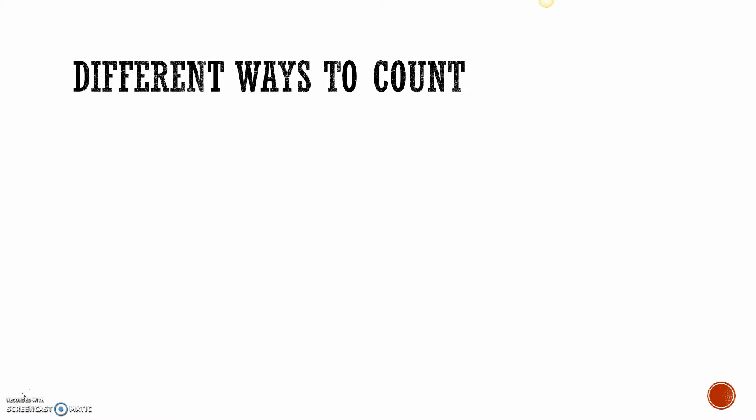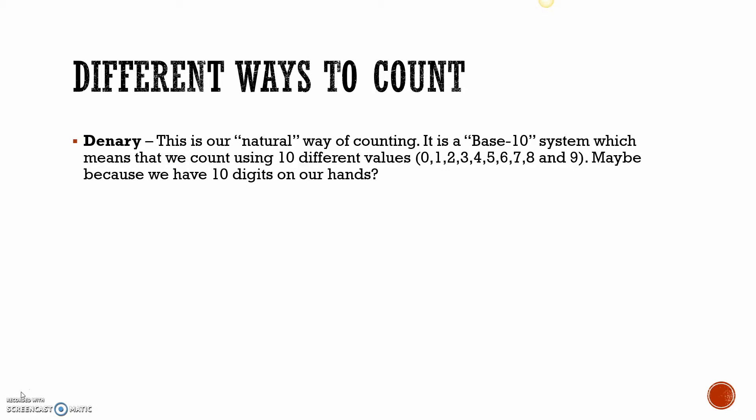So binary, denary, hexadecimal - these are different ways to think about numbers, different ways to be counting and using them. Let's start with denary. This is the way how we naturally speak when we're using numbers - it's a natural way of counting. It's called a base 10 system because we've got 10 different values: 0, 1, 2, 3, 4, 5, 6, 7, 8, and 9. More than likely because we've got 10 fingers on our hands. It's just that 0 to 9 - 10 characters - it's known as a base 10 system.